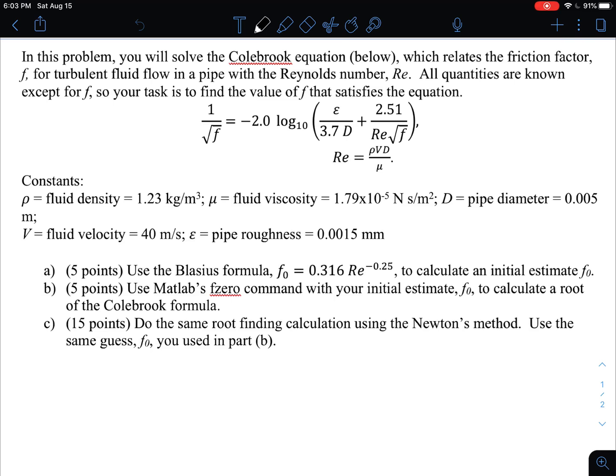So this is what we're trying to do. We're trying to actually find F that satisfies this equation. Let me actually read the question. In this problem you'll solve the Colebrook equation below, which relates the friction factor F for turbulent flow in the pipe with the Reynolds number RE. All quantities are known except for F, so your task is to find the value of F that satisfies the equation.